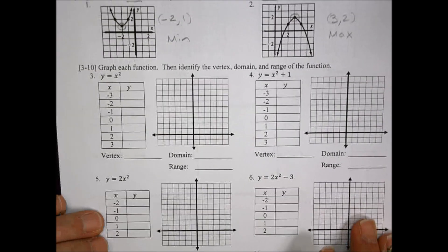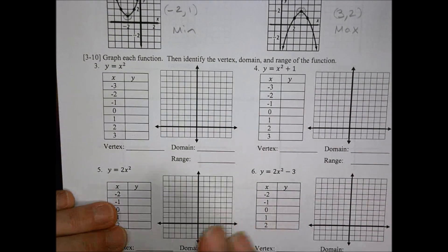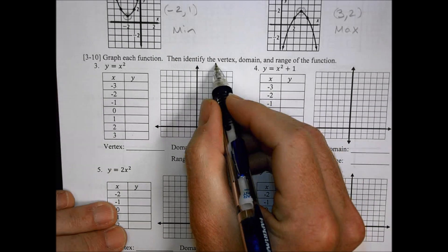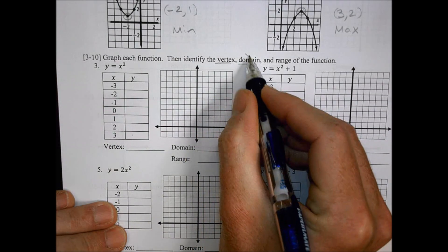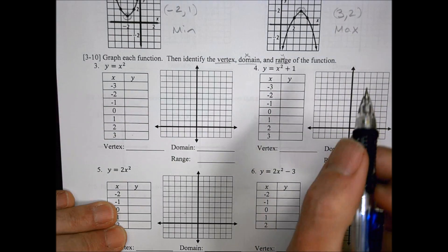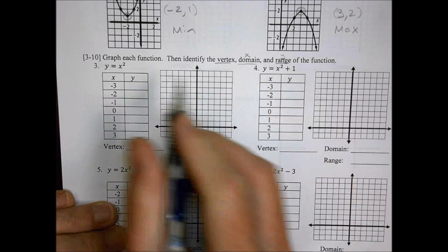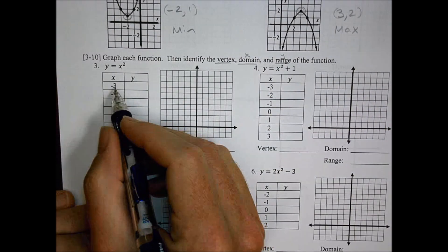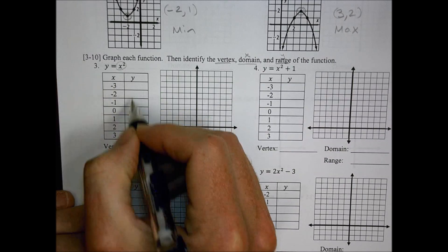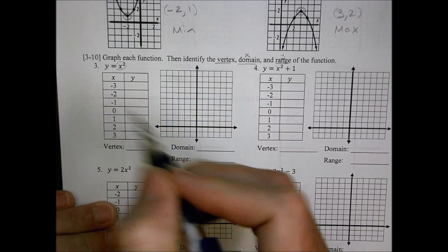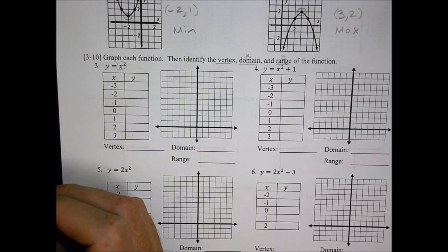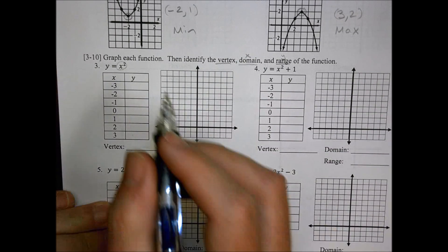I'm going to do some of the odd ones here, just to kind of help you out with your homework. So graphing the function, we're going to identify the vertex, the domain — which is the x values — and the range, which are the y values for the function. This part here is plugging the numbers into that equation, and you can create a little table there. This is something you've been doing for a long time, so now we're going to use some squared values.